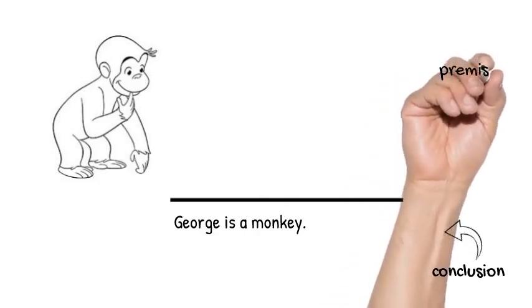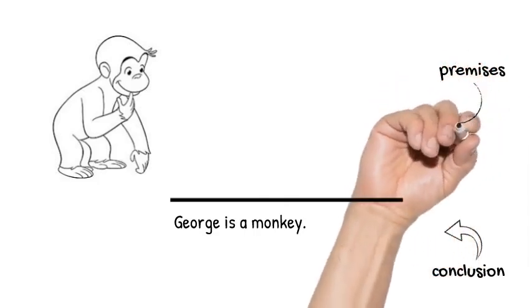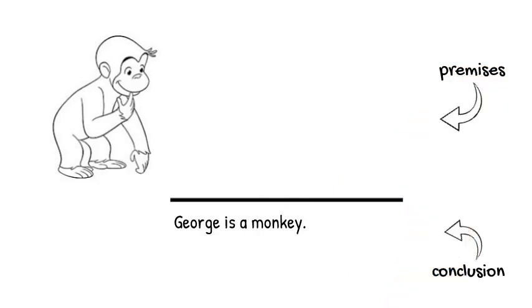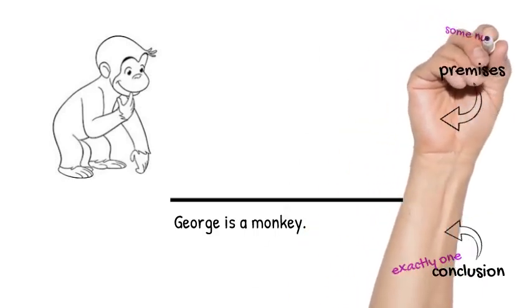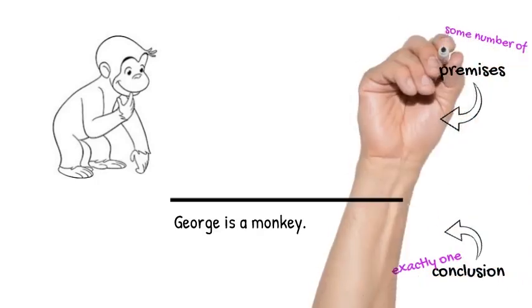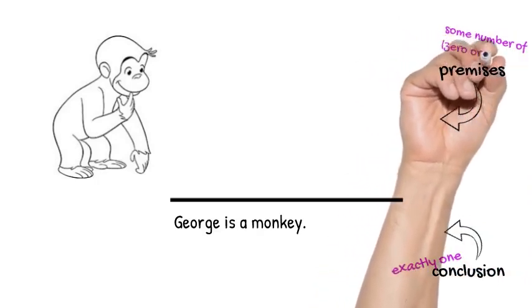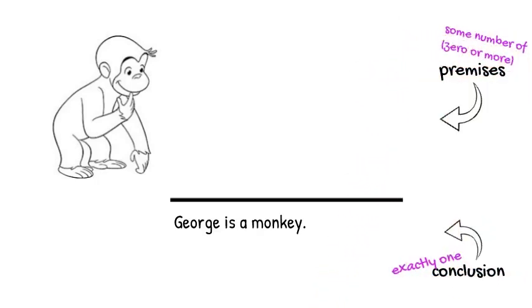In addition, every argument can have some number of premises, which are sentences that we're taking for granted in trying to establish our conclusion. Whereas every argument has exactly one conclusion, arguments will vary in the number of premises, each with some number or other. For example, we've already written down an argument with zero premises. That counts as an argument.